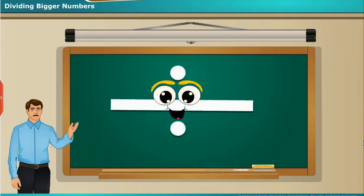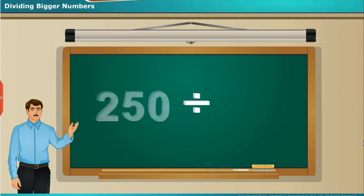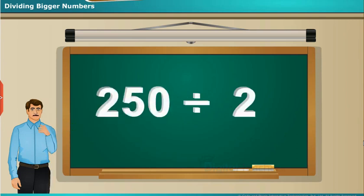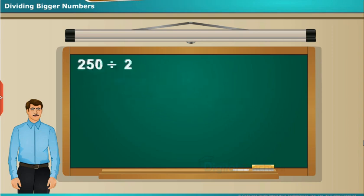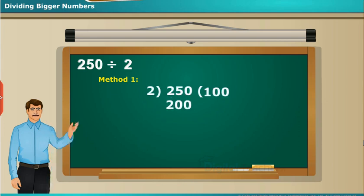Let us take an example to calculate the division of bigger numbers. Let us do the division of the number 250 by 2. We have two methods to find the answer. Now let us see the first method. Step 1: 2 into 100 is closer to 250 because 2 into 200 becomes 400 which is greater than 250.